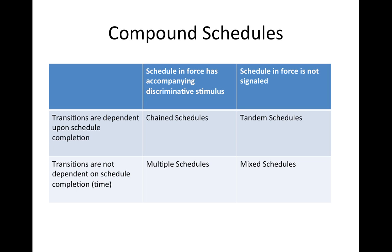Contemporary research in behavior analysis — the experimental analysis of behavior — focuses on schedule interactions. When we put schedules together, we vary two dimensions: whether the schedule has an accompanying discriminative stimulus, and whether transitions between schedules depend on schedule completion or on time. A chain schedule has transitions dependent on schedule completion with an accompanying discriminative stimulus. A tandem schedule has completion-based transitions but no discriminative stimulus. A multiple schedule has time-dependent transitions with a discriminative stimulus. A mixed schedule has time-dependent transitions with no discriminative stimulus.